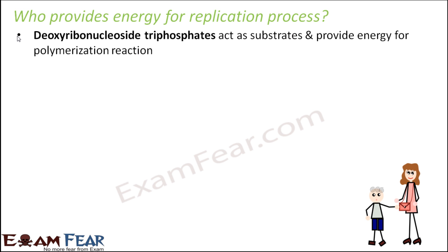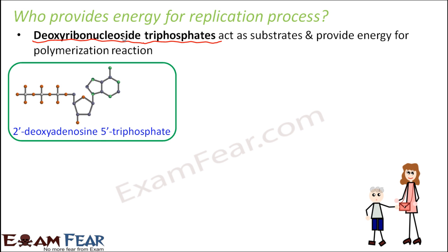In a very similar way, for this replication process, deoxyribonucleoside triphosphates act as substrates and provide energy for the polymerization reaction. What is this deoxyribonucleoside? When the pentose sugar and the nitrogenous base combine with each other, they form a nucleoside. When the pentose sugar is a deoxyribose sugar and it combines with a base, it forms deoxyribonucleoside. When this deoxyribonucleoside combines with a triphosphate — like how we have it in ATP — it becomes a very high energy molecule, because high energy is stored in the phosphate bonds.